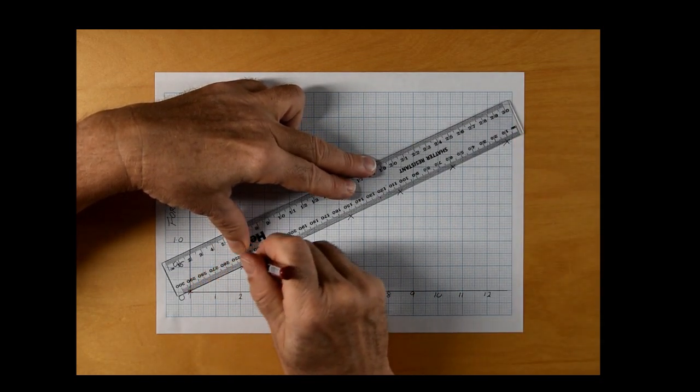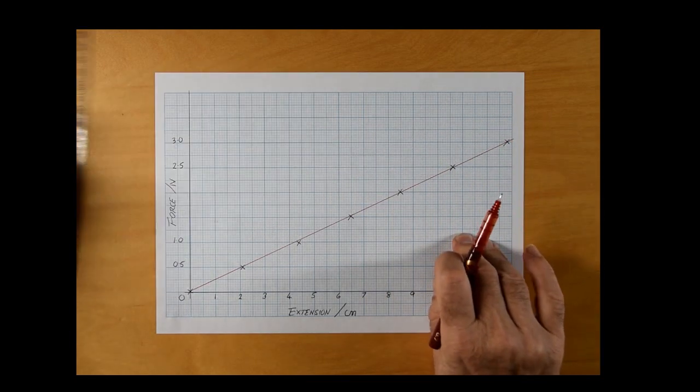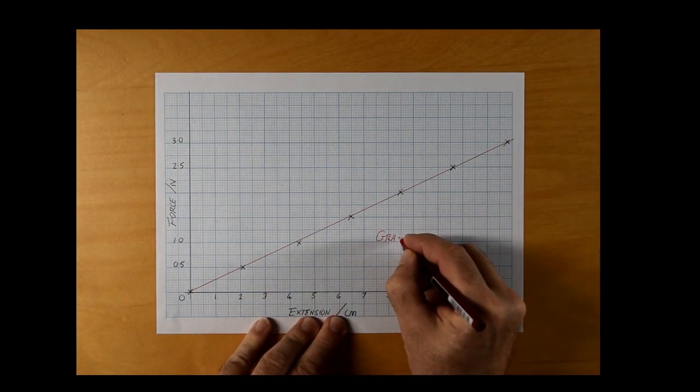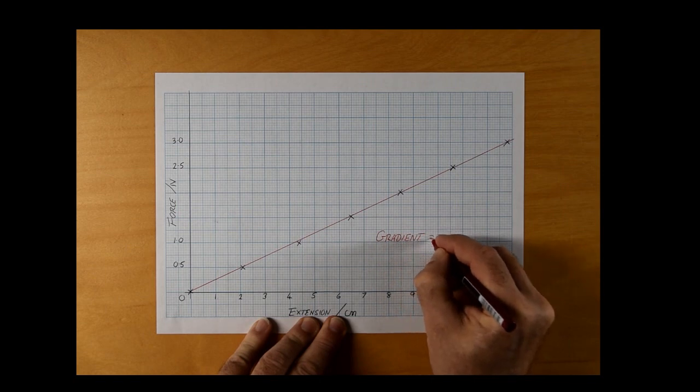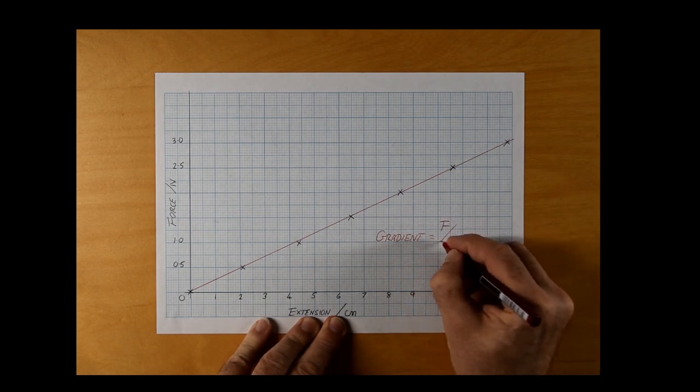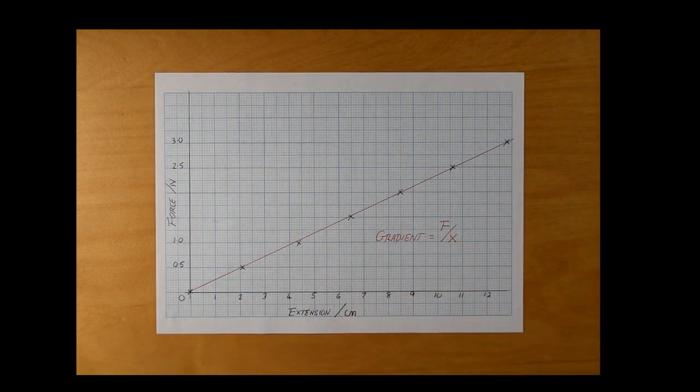The gradient of this line will be force over extension, or f over x. The gradient is constant for any particular spring, and this is called the spring constant, k.